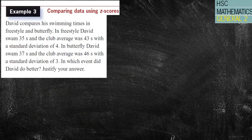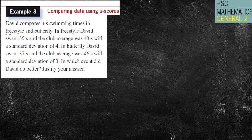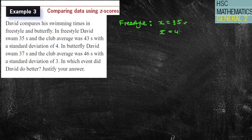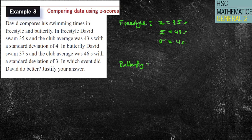David compares his swimming times in freestyle and butterfly. So in freestyle, we've got a score of 35 seconds, a mean of 43 seconds with a standard deviation of 4 seconds. In butterfly, we have a score of 37 seconds, a mean of 46 seconds, and a standard deviation of 3 seconds.